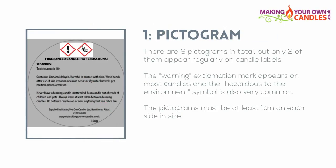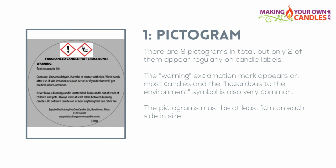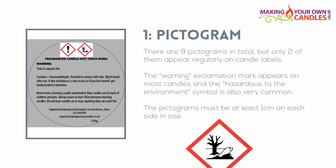Let's take a look at the pictogram. There are 9 pictograms in total, but only 2 of them appear regularly on candle labels. The first on the left is the warning exclamation mark, which will appear on any candle where there's a hazardous ingredient. On the right is the hazardous to the environment symbol, which is also very common. It's worth bearing in mind that the same warning and pictogram appears on washing up liquid. To comply with the regulations, these pictograms must be at least 1cm on each side in size.